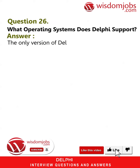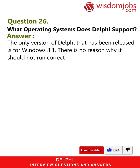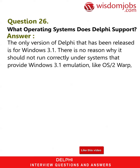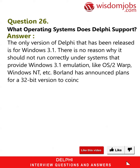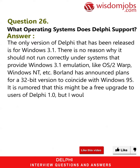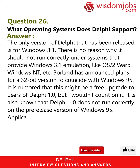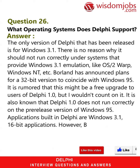Question 26: What operating systems does Delphi support? Answer: The only version of Delphi released is for Windows 3.1. There is no reason why it should not run correctly under systems that provide Windows 3.1 emulation, like OS/2 Warp, Windows NT, etc. Borland has announced plans for a 32-bit version to coincide with Windows 95. It is rumored that this might be a free upgrade to users of Delphi 1.0, but I wouldn't count on it.